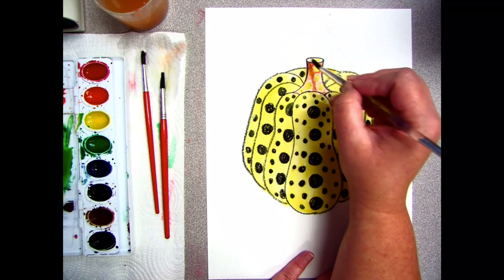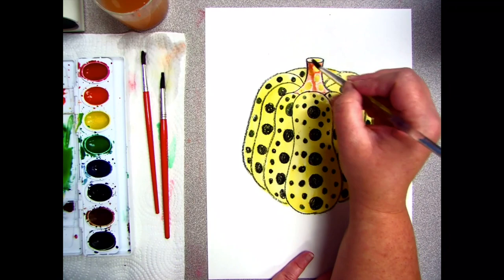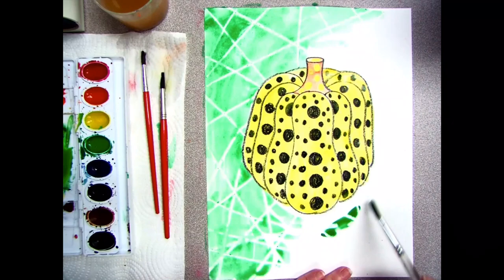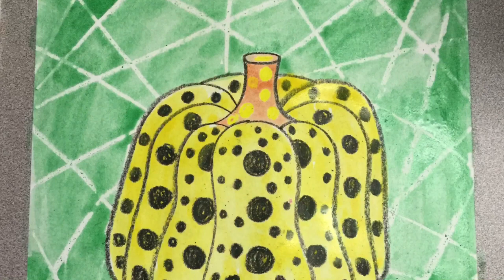When painting watercolors over top of crayon, the wax in the crayon resists the watercolors. If your watercolors create a puddle on your crayon, make sure to take a paper towel and just blot the extra paint off.